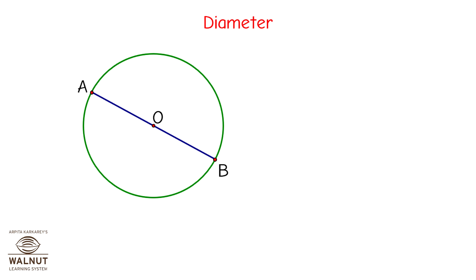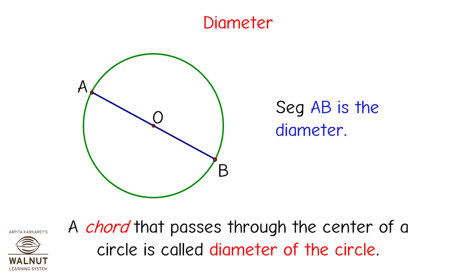Consider a line segment from point A through center O, touching the circle again at point B. Segment AB is a line segment whose end points lie on the circle, so it is a chord. It is a special chord as it also passes through the center of the circle. This kind of chord is called a diameter. A chord that passes through the center of a circle is called the diameter. An infinite number of diameters can be drawn in a circle, and as all radii are equal in length, all diameters are also equal in length.